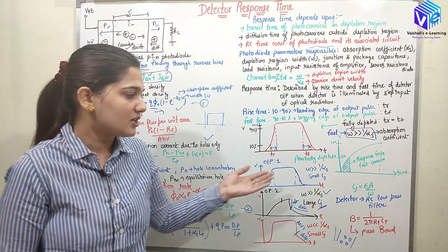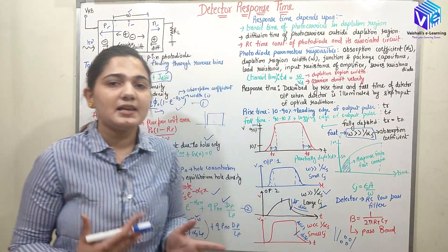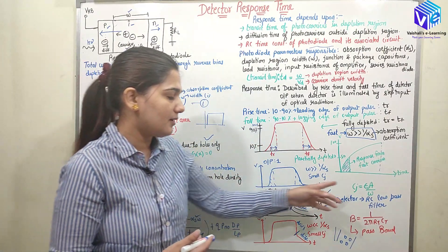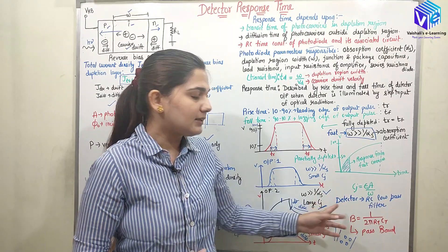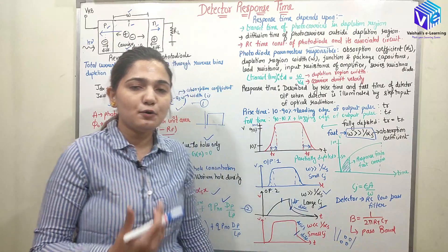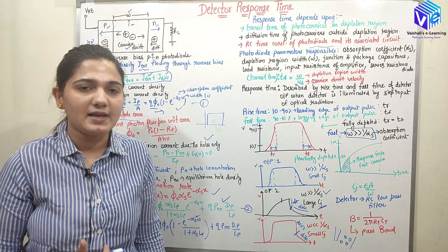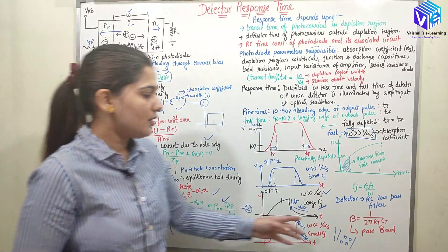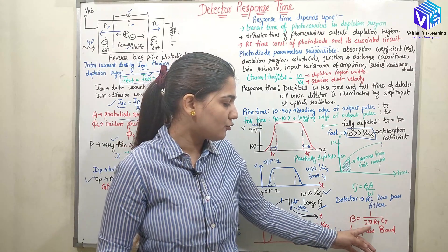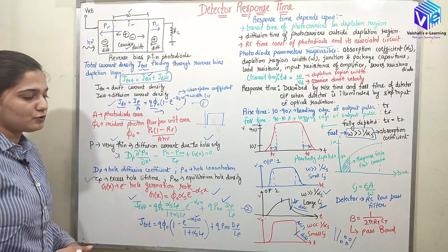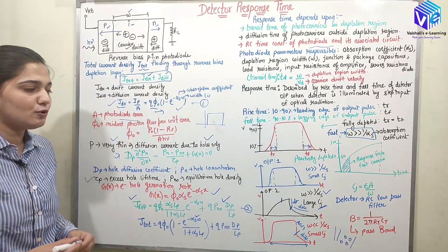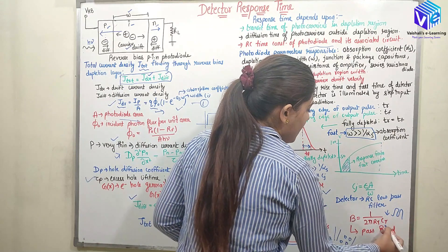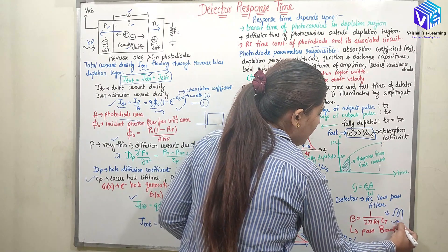The junction capacitance CJ is represented as εS·A / W, where εS is the permittivity of the semiconductor, A is the area, and W is the width of the depletion region. The detector acts like an RC low-pass filter, with its output dependent on resistance and capacitance. The bandwidth is equal to 1 / (2π·RT·CT). If CT is higher, bandwidth becomes less; if CT is lesser, bandwidth becomes high and we get a slower response.